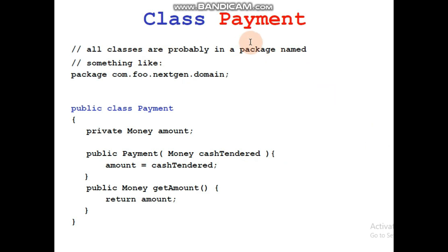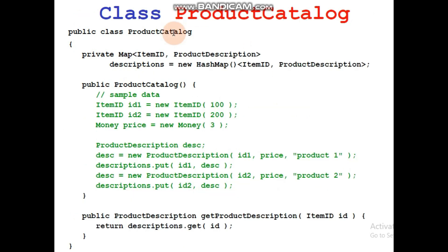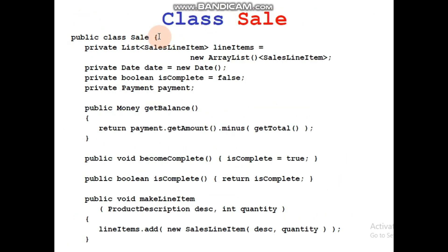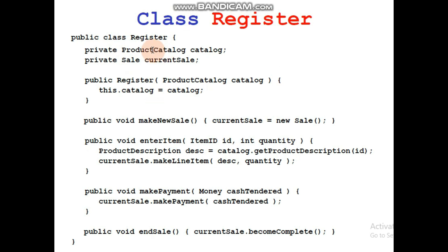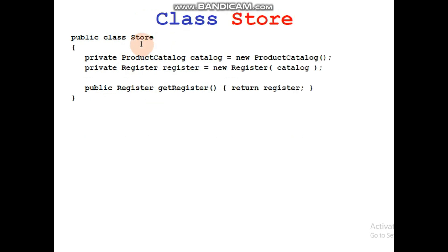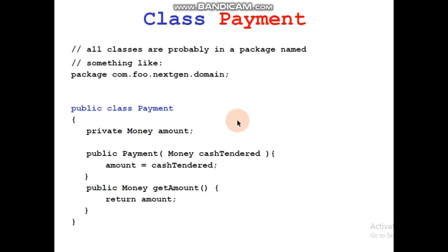All classes are probably in a package. You can see public class Payment — all the classes we have discussed, including Payment, ProductDescription, ProductCatalog (3rd), SalesLineItem (4th), Sale (5th), money getTotal function, Register, and Store — all their code is available here. You can see the complete code for all these classes.